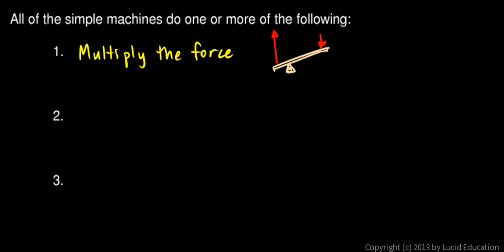A simple machine could also multiply the distance. And the example we saw of that was the wheel and axle. If you have an axle, and then the wheel part attached to it, if you rotate the axle, that rotates the wheel. And the distance that the wheel turns ends up being much larger than the distance the axle moves. So a simple machine can multiply the distance.